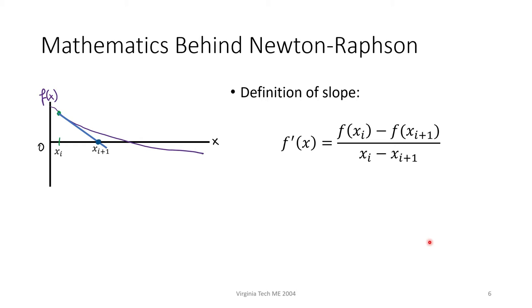We've looked at Newton-Raphson visually, but now let's look at it mathematically. This is the definition of a slope, so it should look pretty familiar. Because we follow the tangent line all the way down to the x-axis, f of x sub i plus 1 equals 0.